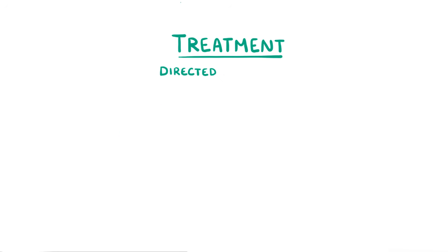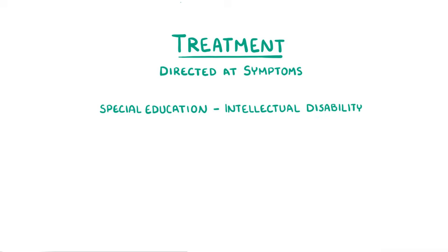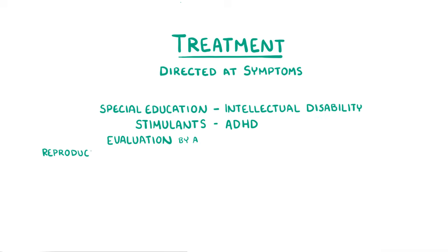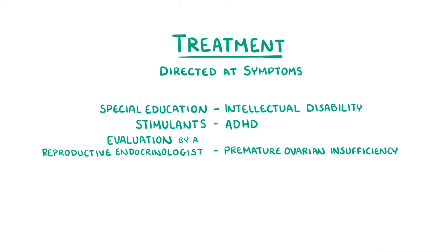Treatment of Fragile X is directed at individual symptoms, for example special education for intellectual disability, stimulants for ADHD, and evaluation by a reproductive endocrinologist for premature ovarian insufficiency.